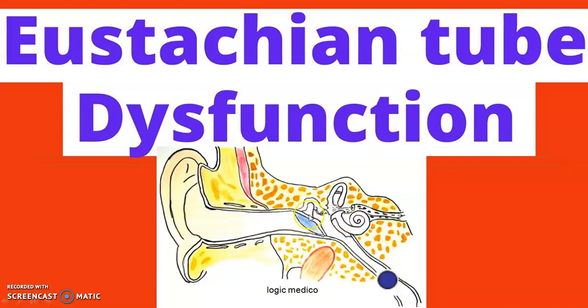It maintains the pressure on either side of the tympanic membrane so that the tympanic membrane is in optimum position so that all of us can hear better. Also, the mucous membrane of this middle ear cavity produces mucous that will be drained into the nasopharynx via the eustachian tube. What if these functions of the eustachian tube are not performed? Understanding the dysfunction, the causes of the dysfunction, and the treatment options available for eustachian tube dysfunction — all these will be covered in this video.